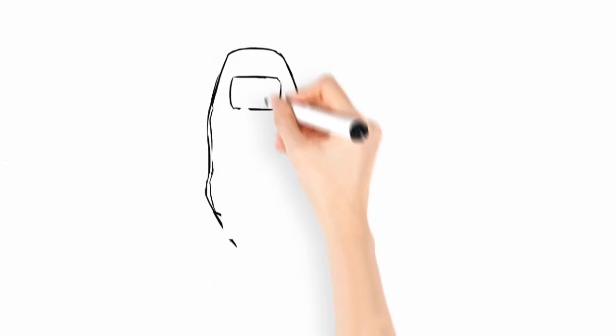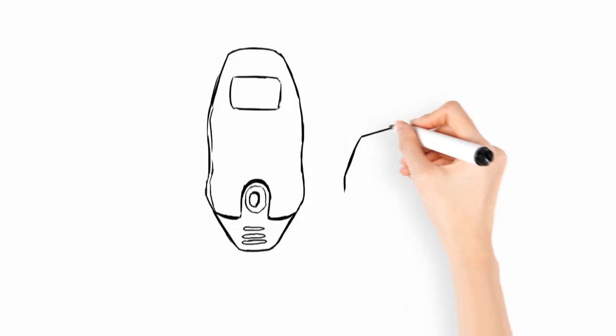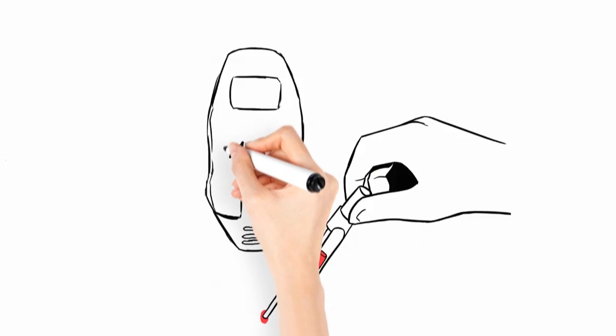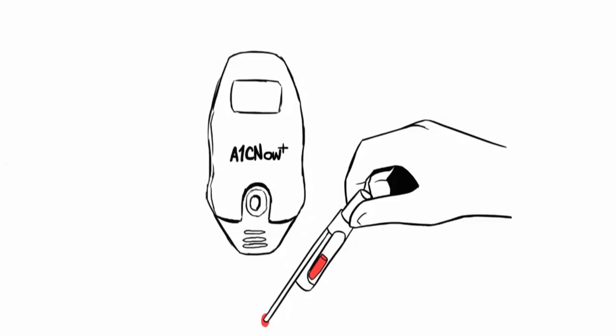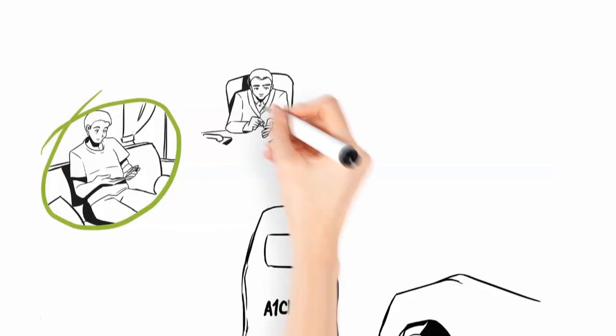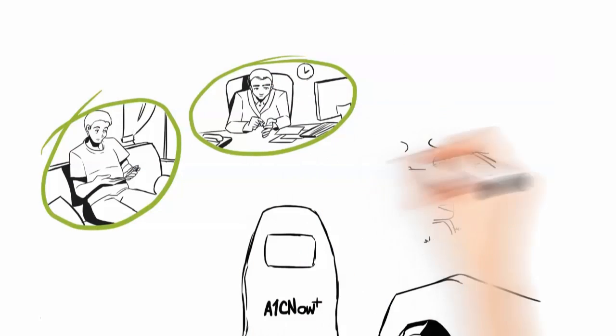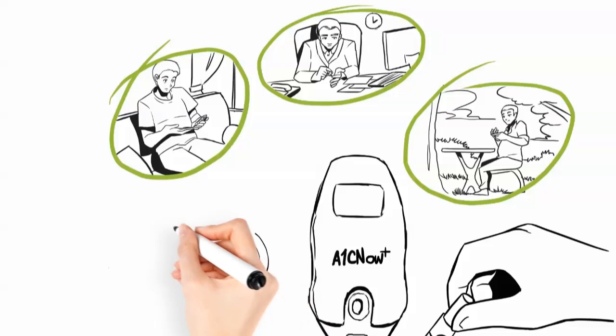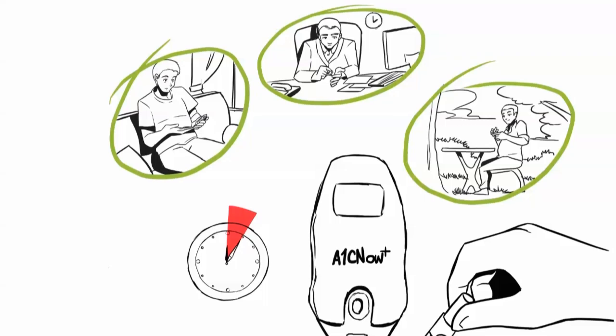So, let me introduce you to the best A1c test kit available in the market today. This test kit is called A1c Now Plus. It's a portable, handheld meter, which gives you the ability to conduct the test anywhere. More so, it gives you accurate results in just 5 minutes. Best of all, this powerful test kit is extremely affordable.